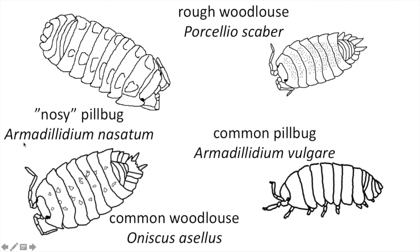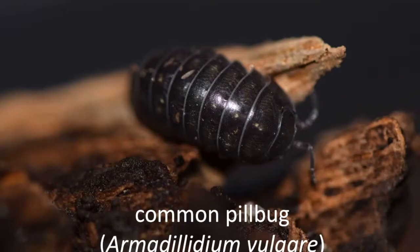Both pill bugs belong to the scientific genus Armadillidium. We have Armadillidium vulgare, very common in many parts of the world, and Armadillidium nasatum, very common where I live in Pennsylvania. The Porcellio scaber, the rough wood louse, is also fairly common, as is the common wood louse Oniscus asellus. These are all primarily European species from England, brought over by settlers in colonial times.